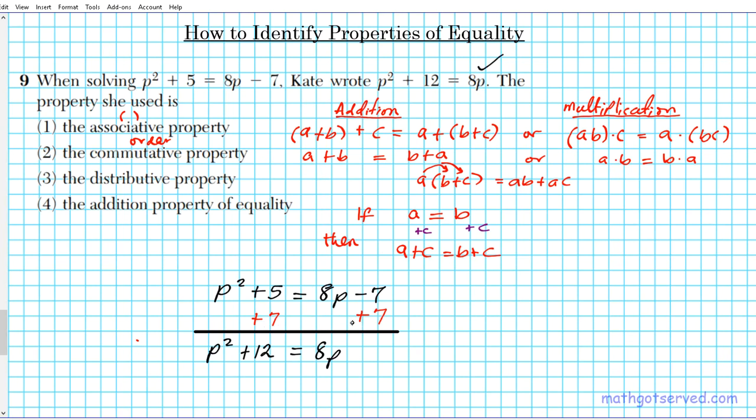So we added a number to both sides of the equation, so we can clearly see that this has nothing to do with associative, commutative, no distributive—it's option number four. That is the answer to this question.